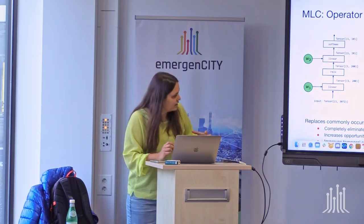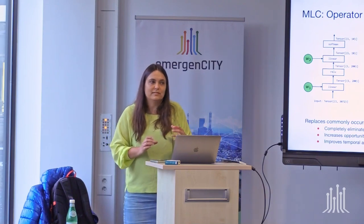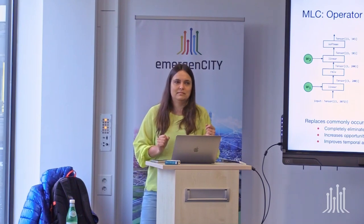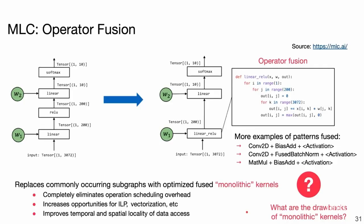By fusion you create monolithic kernels. What is the drawback? If you would like to do training, having fused operators is not a good idea — because during backpropagation you need the intermediate outputs of individual operators. So operator fusion is an inference-only optimization.